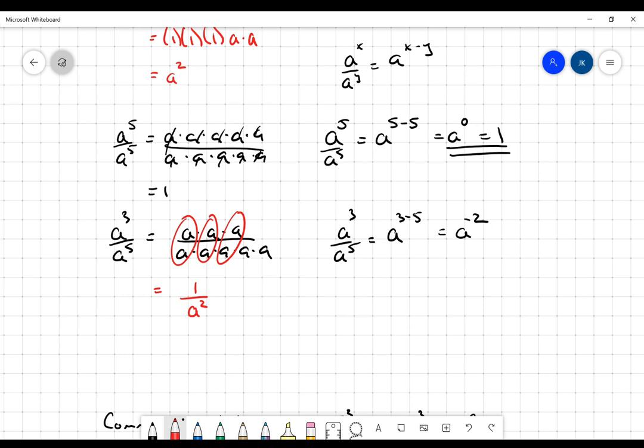What I end up with here is a situation where these two expressions must be the same. One over a squared must be the same as a to the negative two, because they are both equal to a cubed divided by a to the fifth.